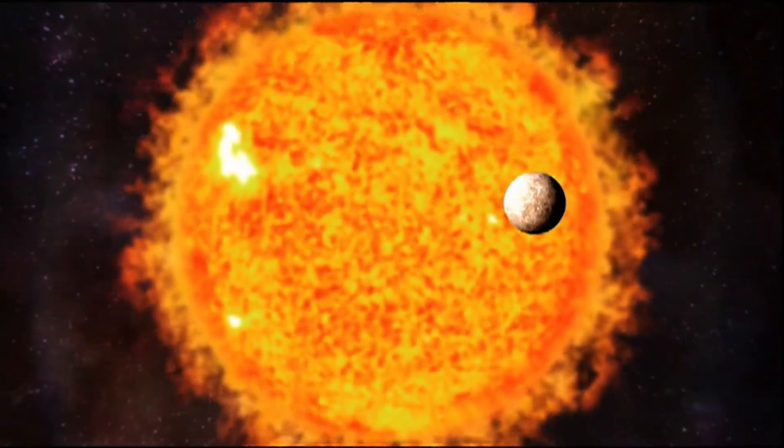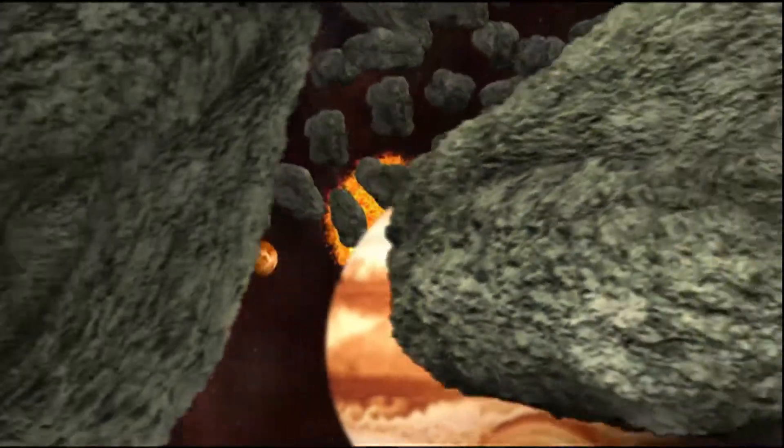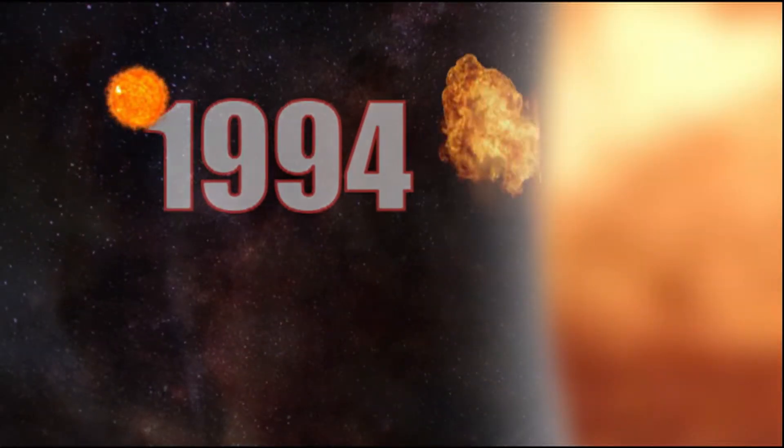Comets are bodies of ice and rock formed beyond the outermost planets that have fallen into an orbit around our sun. One of them, comet Shoemaker-Levy 9, broke up and smashed into Jupiter in 1994.